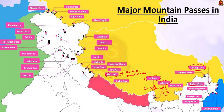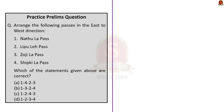In Himachal Pradesh, important passes include Rohtang, Bara-lacha La, Shipki La, and Debsa Pass. Shipki La is the only inter-country pass in Himachal Pradesh, connecting Tibet and the Kinnaur district. In the Jammu & Kashmir and Ladakh region, important passes include Imis La, Chang La, Pensi La, Lanak La, Kara Tagri, Aghil, Khunjerab, Phartse La, Mintaka, Khardung La, Burzil, Zoji La, Pir Panjal, and Banihal Pass. From this information, we can find the correct sequence, and the correct answer is option C — 1, 2, 4, 3.